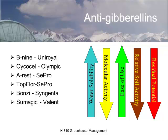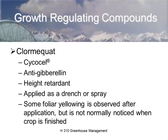These products all have different levels of water solubility and work in different places. B9 was originally sold by Uniroyal, became Crompton Chemical, and is now marketed primarily by Olympic Horticulture. Cycocel is also Olympic Horticulture. A-Rest is by Sepro, Topflor is Sepro, Bonzi is a Syngenta product, and Sumagic is a Valent product. These chemical plant growth regulators are manufactured primarily by pesticide companies.